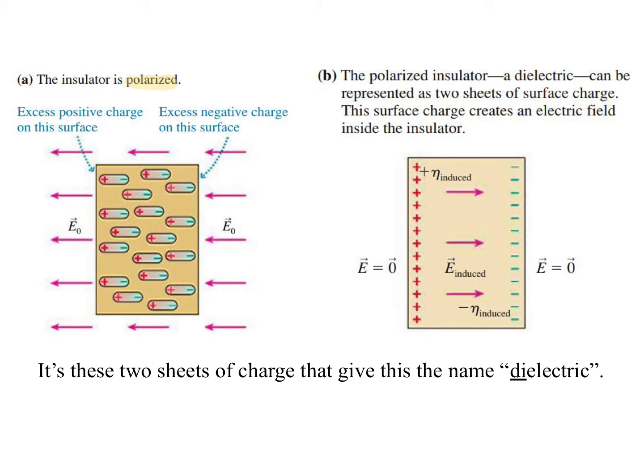Now, it doesn't end up that they actually move. It's an insulator, so they can't really move much. They just shift a little bit. They're stuck where they are, but the positives end up spending more time on the left, and the negatives end up more on the right of their own little things.